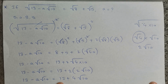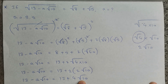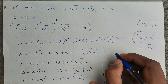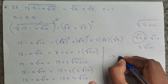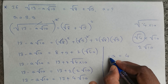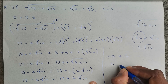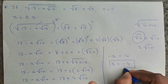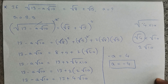Now comparing the LHS and RHS: on the left side we have 13 and on the right side we also have 13. On the left we have √10, on the right also √10. The extra terms are −a on the left and +4 on the right. By comparison, −a = +4, so taking the minus to the right side, a = −4. The value of a is −4.